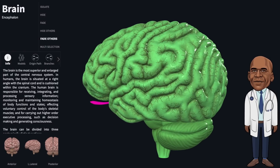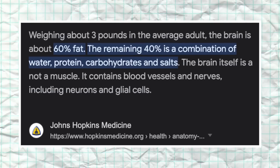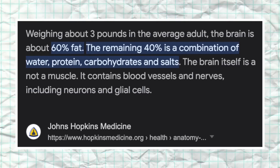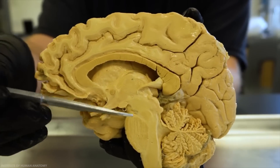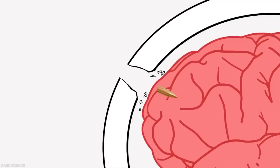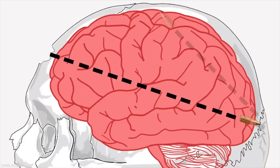Brain tissue is essentially electrified jello with a biological composition that is approximately 60% fat and 40% water, protein, carbohydrates, and salts. Neither the tissue nor the blood vessels and nerves running through it offer any meaningful resistance to bullet fragments contained within the hard confines of the skull. A bullet that penetrates a hard section of the skull may not have enough kinetic energy to exit on the other side. Scrambled eggs, anyone?